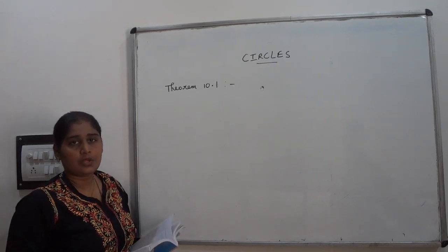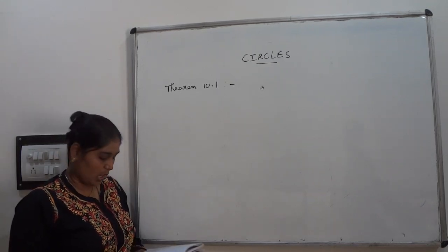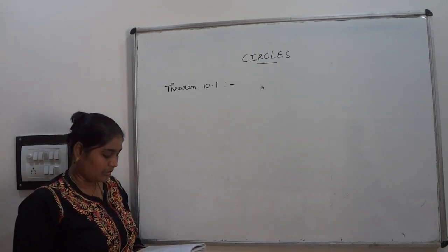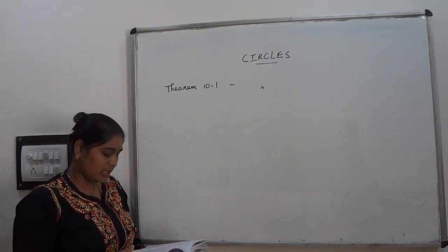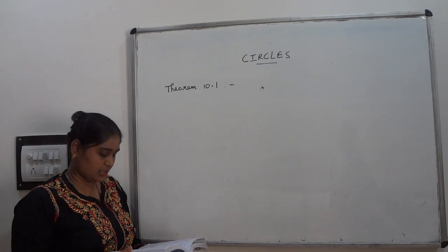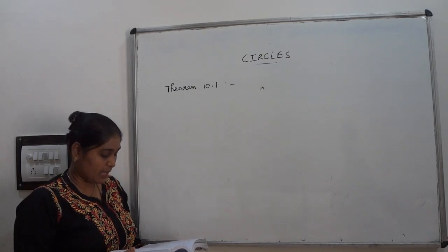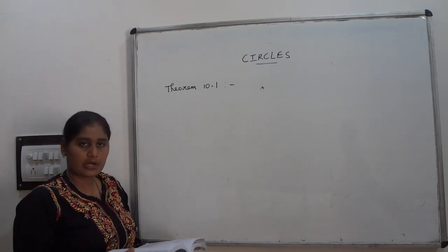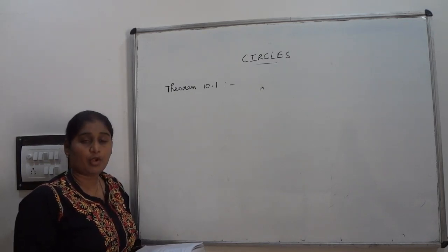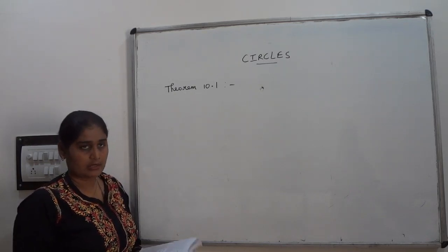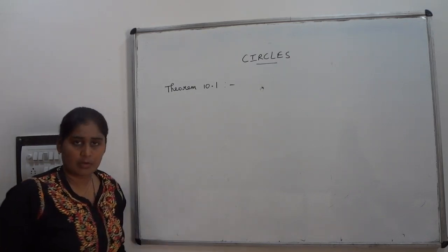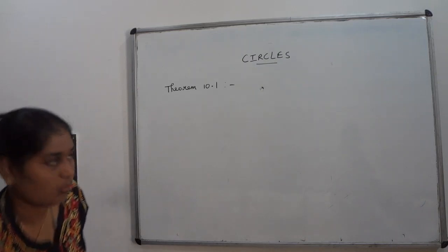Let's start with Theorem 10.1. The tangent at any point of a circle is perpendicular to the radius through the point of contact. I am going to prove this theorem now.